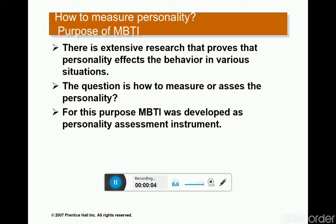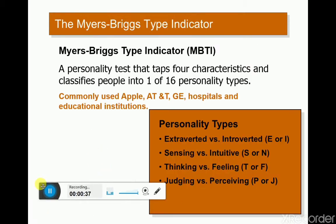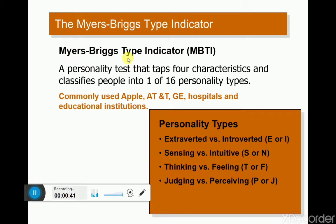Now how do we measure or access personality? We need an instrument for personality measurement. The instrument used is the MBTI — Myers-Briggs Type Indicator. MBTI is the abbreviation of Myers-Briggs Type Indicator. Myers-Briggs is the name of the person who invented this method.